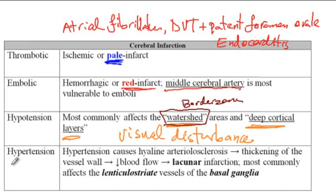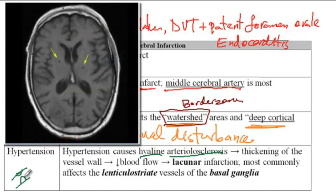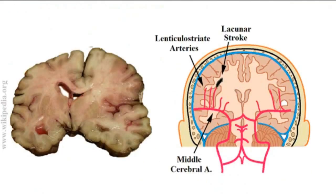The next form of ischemic stroke is caused by hypertension. Hypertension causes hyaline arteriosclerosis of the vessels, resulting in thickening of the blood vessels and insufficient blood supply to the brain, causing lacunar infarct. This type of infarct most commonly affects the lenticulostriate vessels of the basal ganglia. The lenticulostriate arteries come off the middle cerebral artery, and if there is a problem with the perfusion of these vessels, it can cause lacunar stroke.